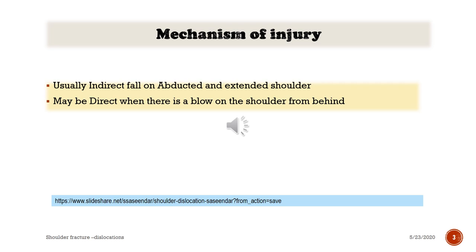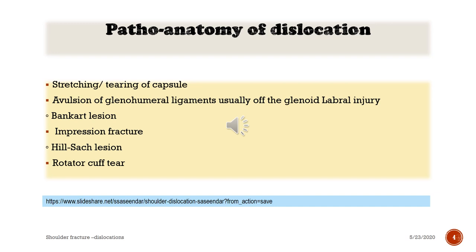Mechanism of injury is usually indirect — a fall on an abducted and extended shoulder. It may be direct when there is a blow on the shoulder from behind. Pathoanatomy includes stretching and tearing of the capsule, avulsion of glenohumeral ligaments, glenoid labral injury (Bankart lesion), impression fracture (Hill-Sachs lesion), or associated rotator cuff tear.